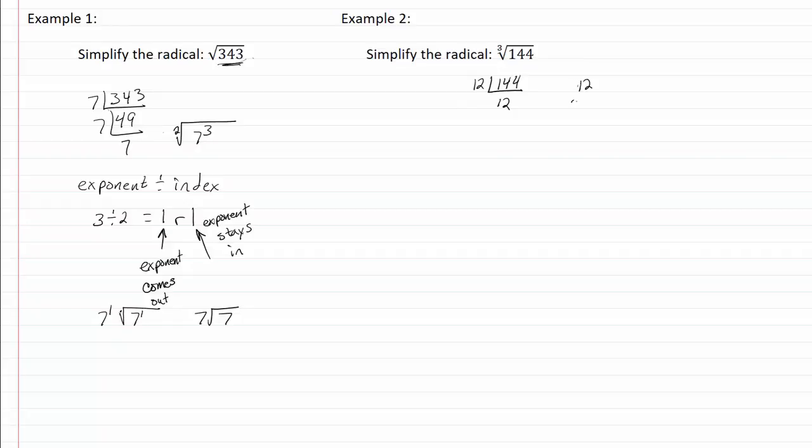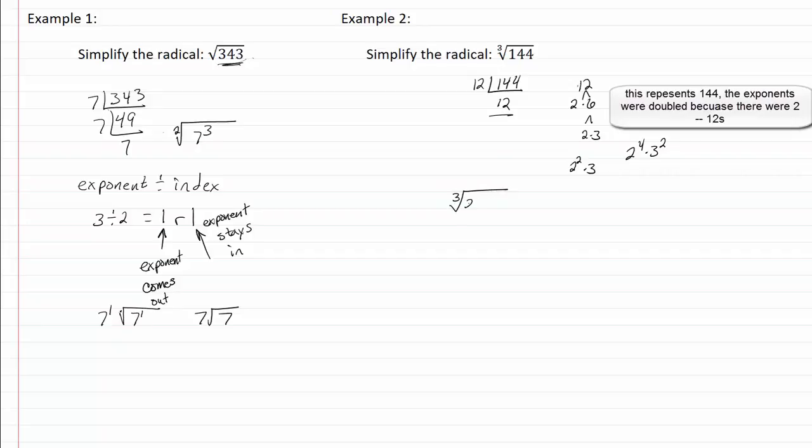So twelve is two times six and six is going to be two times three. So twelve is two squared times three and if we have two of those that means I'm going to have two to the fourth times three squared.